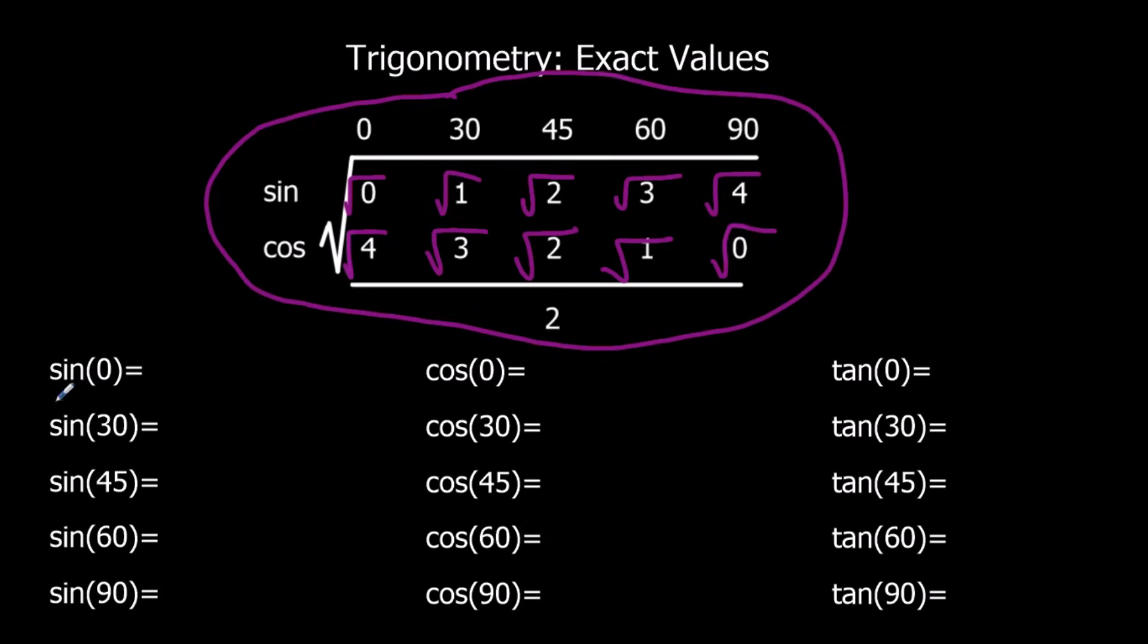Let's have a look at how we can use this. If I wanted to know what sin 0 was, I meet sin and 0. I go along sin, find out where 0 is, and see what I've got. Sin 0 is root 0. If I write root 0 over 2, well, root 0, what multiplies by itself to make 0 is 0. That's actually 0 over 2, and half of 0 is 0. So sin 0 is 0.